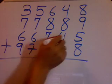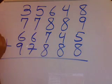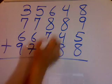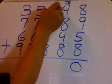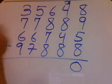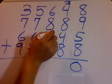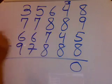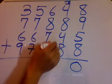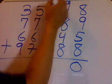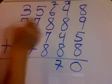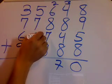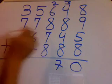8 plus 9 gives 17, plus 5 is 22, plus 8 is 30 — write 3 and 0. Then 4 and 3 is 7, plus 8 is 15, plus 4 is 19, plus 8 is 27.